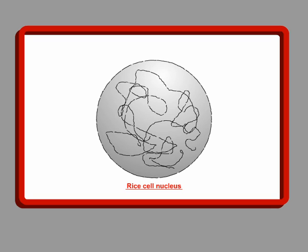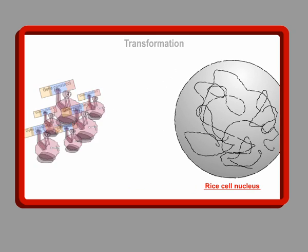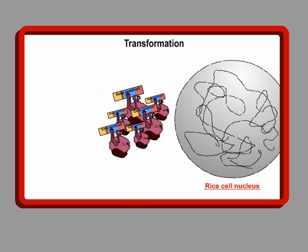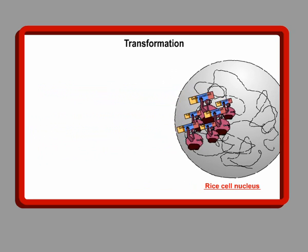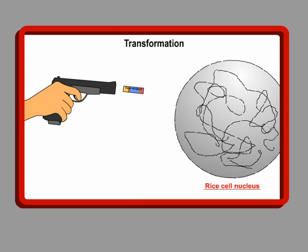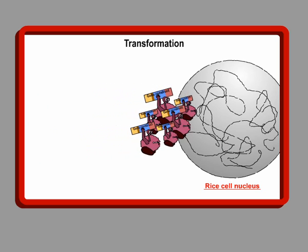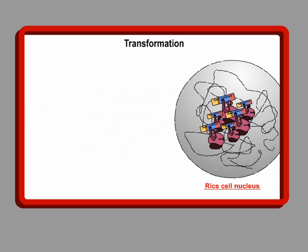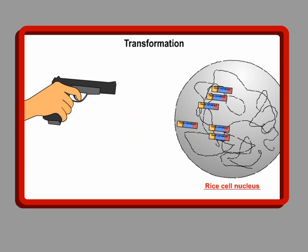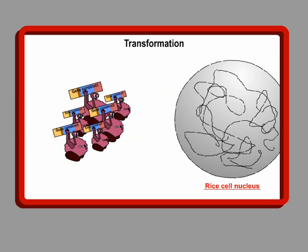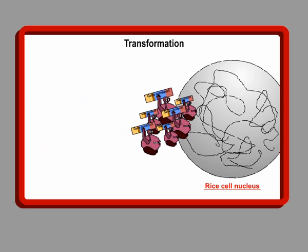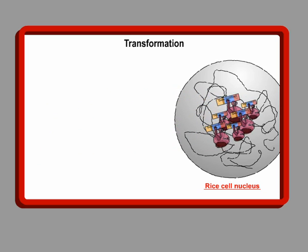There are two ways to do this: use bacteria to carry the gene construct in, or shoot thousands of the new gene constructs into the cell. Both processes can and usually will cause damage to the DNA of the cell. Also, we can never be sure exactly where the gene construct will land on the long strings of DNA. There can be unexpected results.